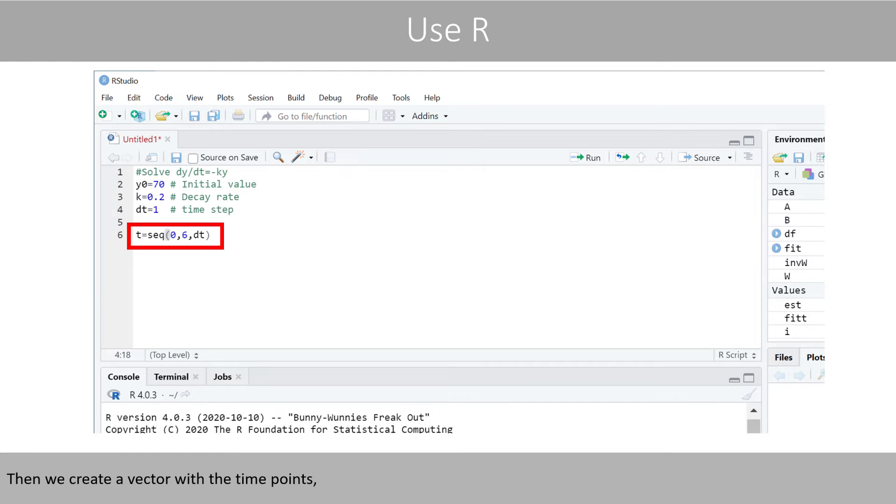Then we create a vector with the time points, which starts with the value 0, increases with the time step of 1, since we have set dt to 1, and ends at 6. When we run this code, t will be equal to a sequence of numbers from 0 to 6.